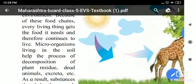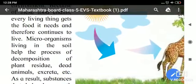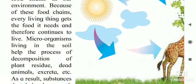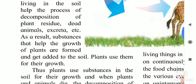Micro organisms living in the soil help the process of decomposition of plants, dead animals, excreta, etc. As a result, substances that help the growth of plants are formed and get added to the soil. Plants use them for their growth.